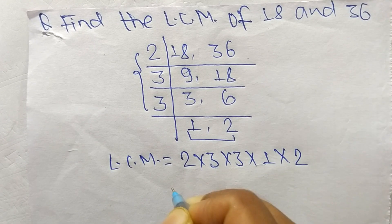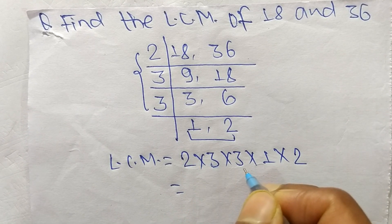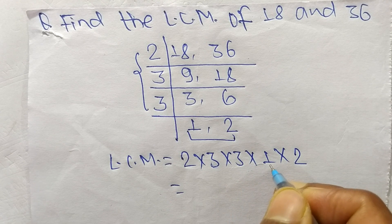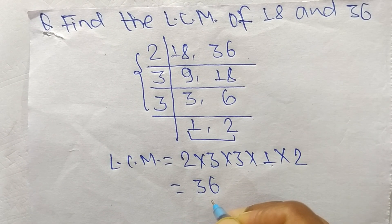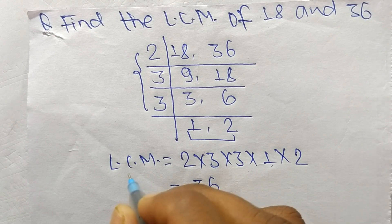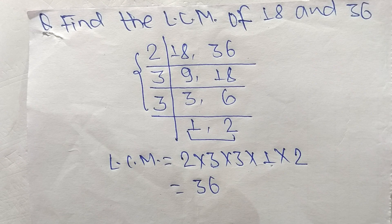2 times 3 means 6, 6 times 3 means 18, 18 times 1 means 18, 18 times 2 means 36. So 36 is the LCM of 18 and 36.